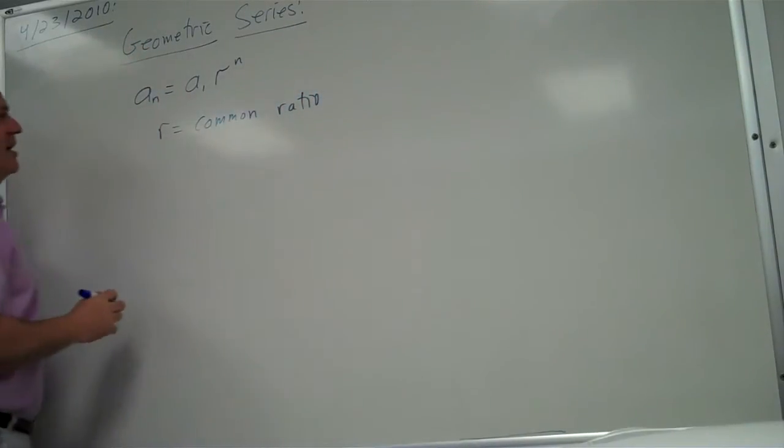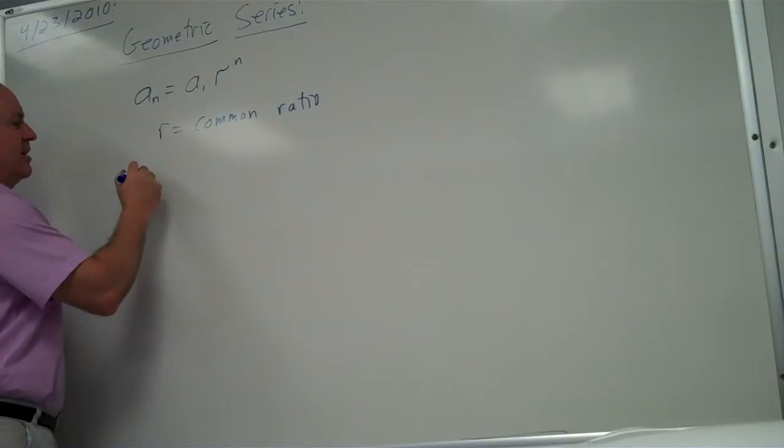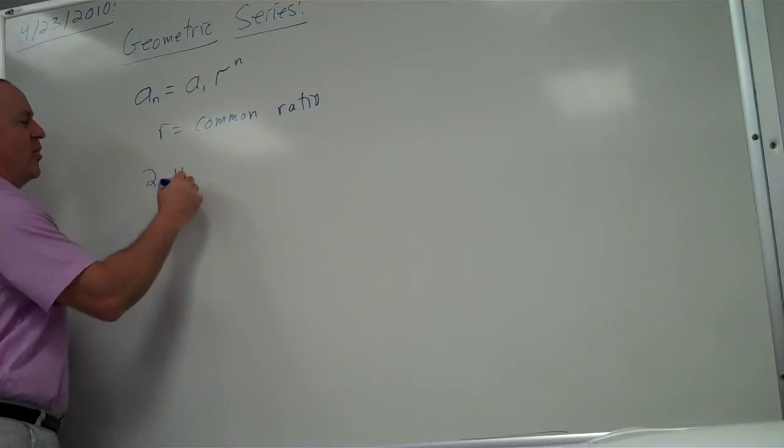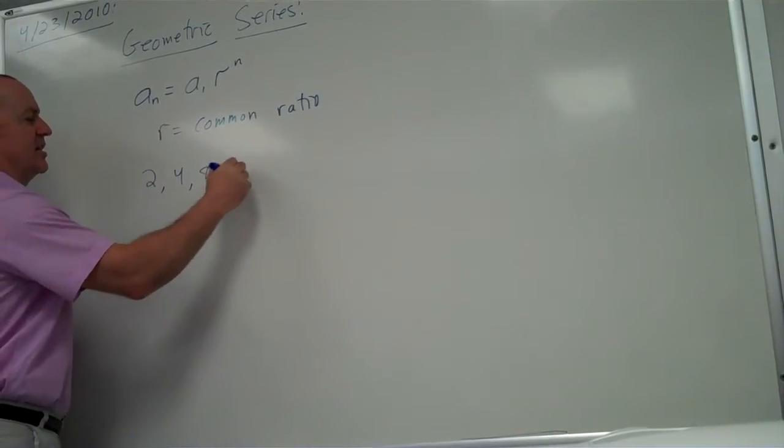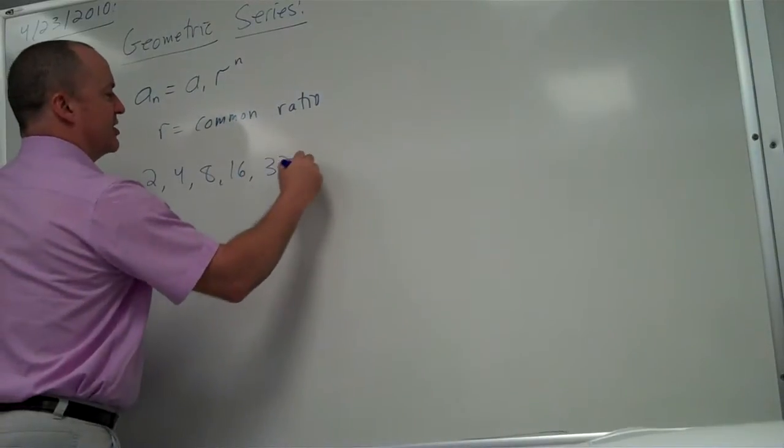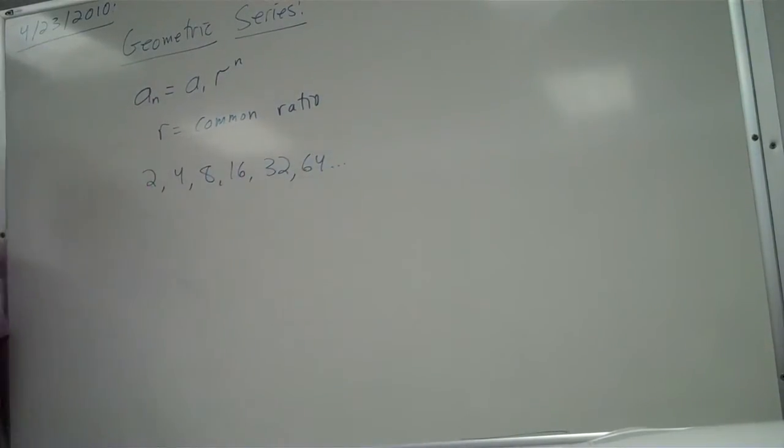Here's why. Really simple geometric series would be 2, 4, 8, 16, 32, 64, dot, dot, dot. What's going on here?